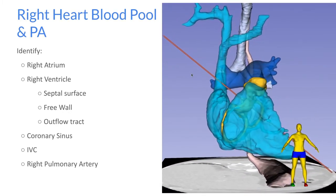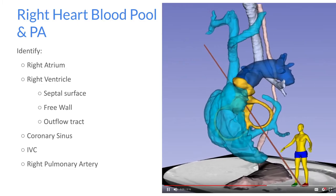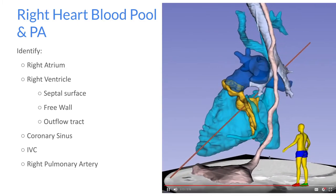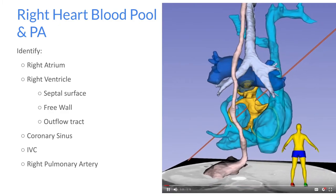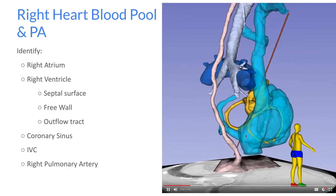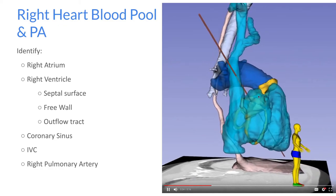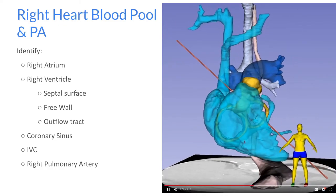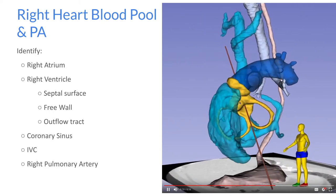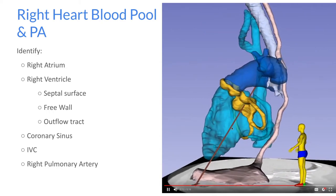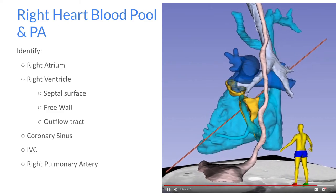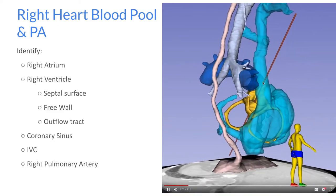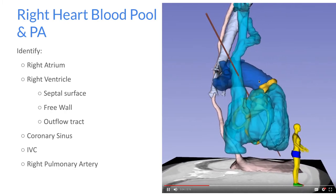Here we have the right blood pool. You can see the right atrium with the IVC — unfortunately truncated in the model — the SVC, the coronary sinus coming into the right atrium, the right atrial appendage, the tricuspid valve, the RV free wall, the RV outflow tract, and the RV septal surface. You can see the pulmonary artery, the main PA and the branches, and their relationship to the airway.